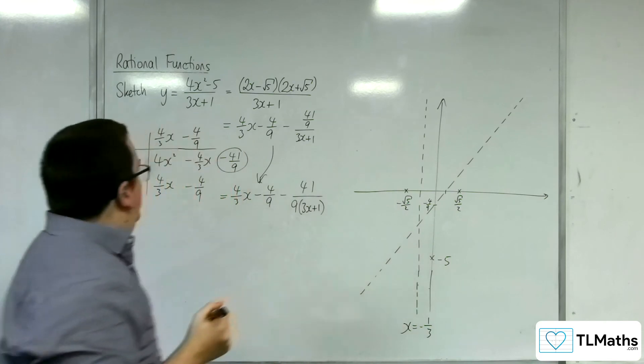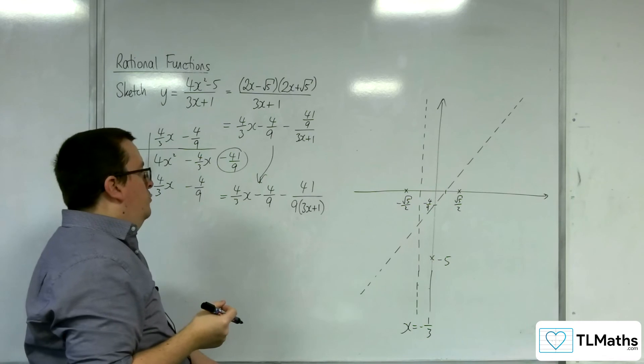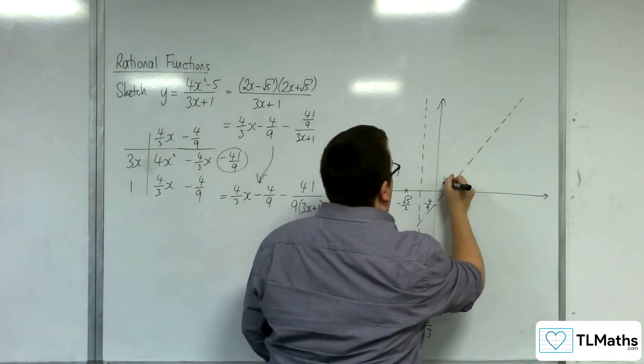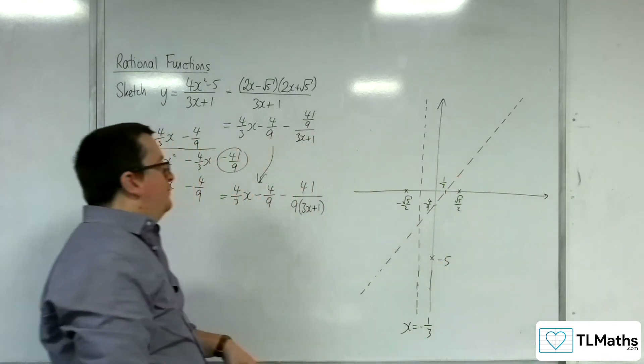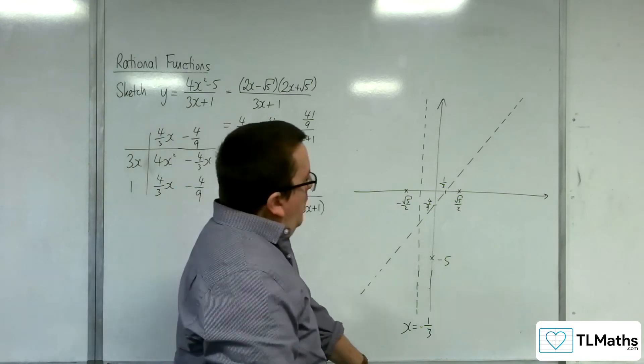So that is minus 4 ninths. And that. It's 4 ninths, 1 ninths. Just 1 third, isn't it? Yeah. Yeah.